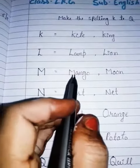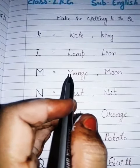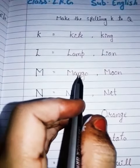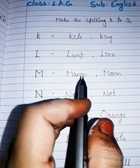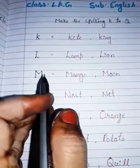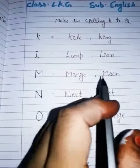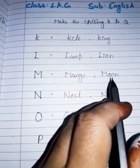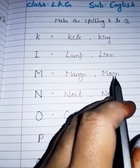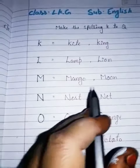M. M for mango, M-A-N-G-O, mango. M. M for moon, M-O-O-N, moon.